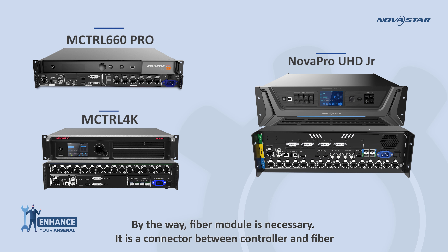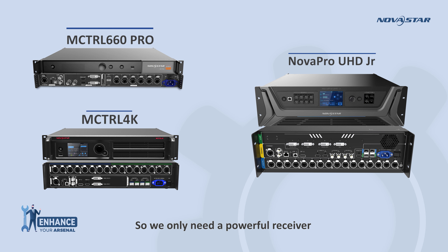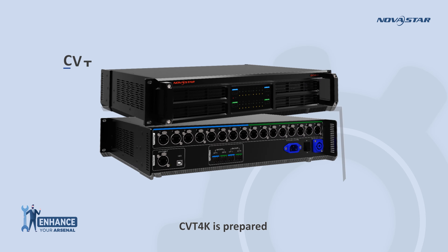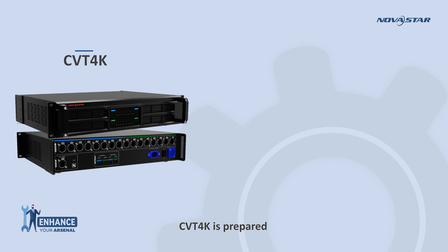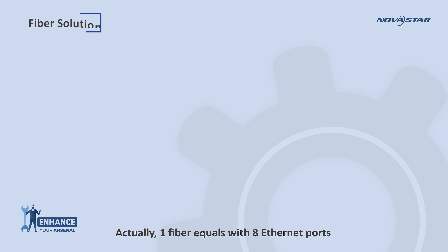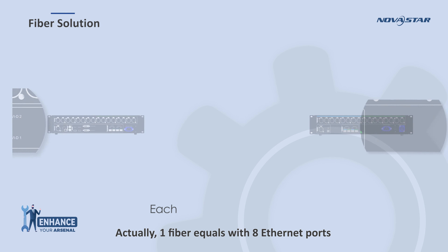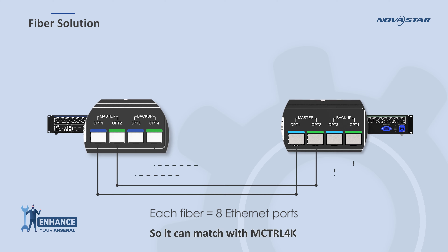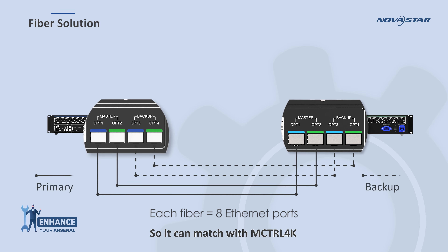The fiber module is a connector between the controller and the fiber, so we only need a powerful receiver — the CVT4K. It has four fiber ports and 16 Ethernet ports. Two fibers are for primary and another two are for backup. One fiber equals eight Ethernet ports, so it can match with the M-Control 4K.